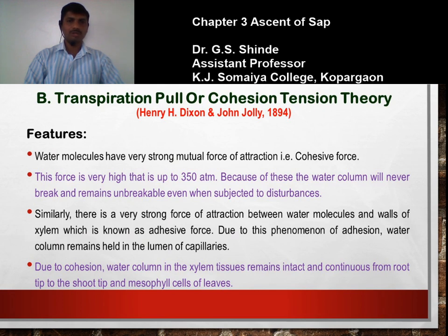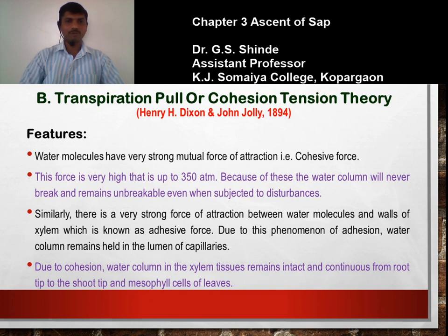The mechanism of ascent of sap can be explained with the help of the transpiration pull or cohesion-tension theory. This theory explains how the upliftment of water and minerals takes place from the root to the shoot of the plant. This theory was proposed by Irish botanist Henry H. Dixon and physicist John Jolly in 1894, and is variously known as Dixon and Jolly's theory of cohesion, cohesion-tension theory, or transpiration pull theory.